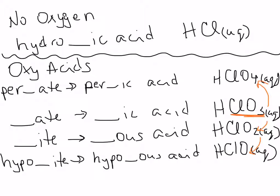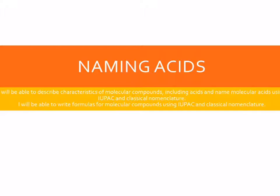So if you know the -ate ion, you can figure out the per-ate ion, you can figure out the -ite ion, and you can figure out the hypo-ite ion just by changing the number of oxygens. And again, the charge will never change. So that has been our review of naming acids using the classical naming system. I hope it has been helpful.